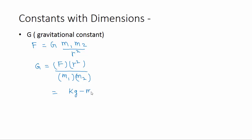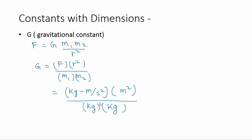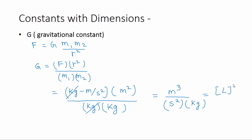The unit of force is kg·m/s², distance has unit m², and mass has unit kg. Cancelling terms: we get m³/s² divided by kg, which gives m³·s⁻²·kg⁻¹. In dimensional form: meter is L, second is T, kg is M — so the dimension of G is M⁻¹·L³·T⁻².